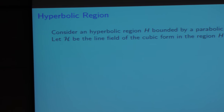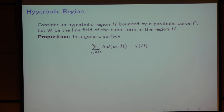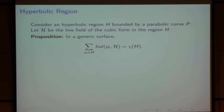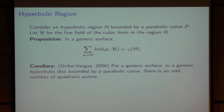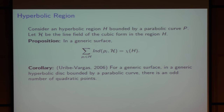In the hyperbolic region, again bounded by a parabolic curve, for a generic surface the sum of the indices equals the Euler characteristic of region H. As a corollary — this is a result of Uribe-Vargas that Ronaldo mentioned — for a generic surface in a generic hyperbolic disk bounded by a parabolic curve, there is an odd number of quadratic points. This is a consequence of the proposition, since the Euler characteristic of a disk is one, and generically the index in the hyperbolic part is plus or minus one, so we must have an odd number of quadratic points.